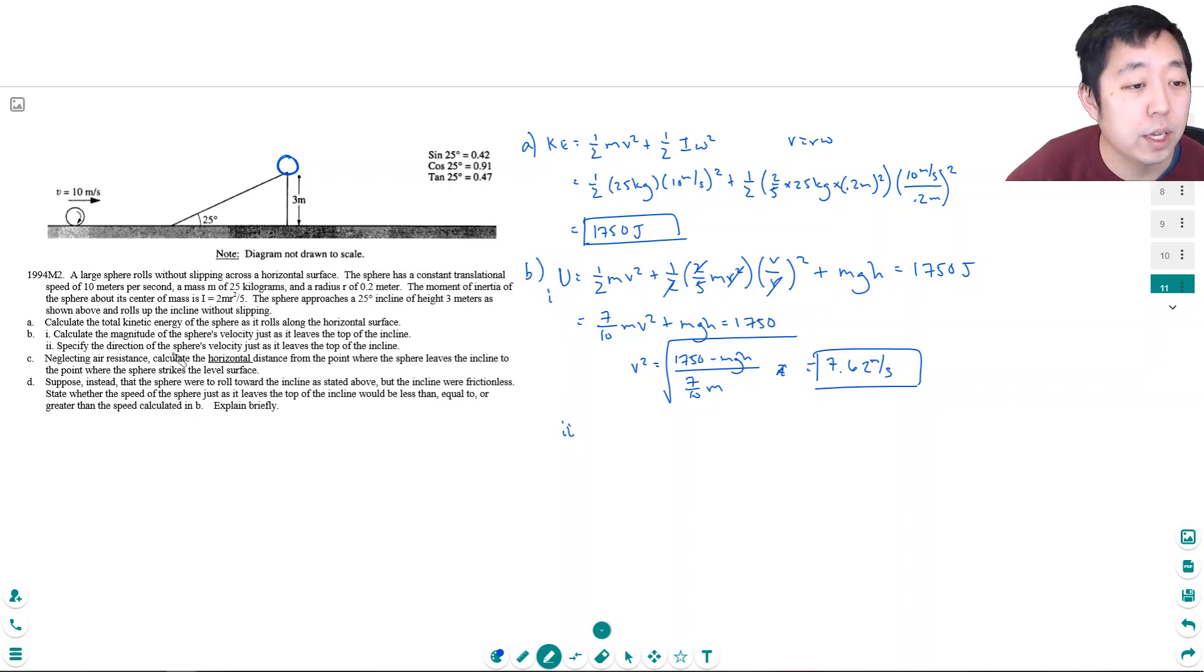Part two is specify the direction of the sphere's velocity just as it leaves the top of the incline. Just as it leaves it, it's like this, right? This is its velocity. So it's the same angle as the ramp, which is 25 degrees above horizontal.